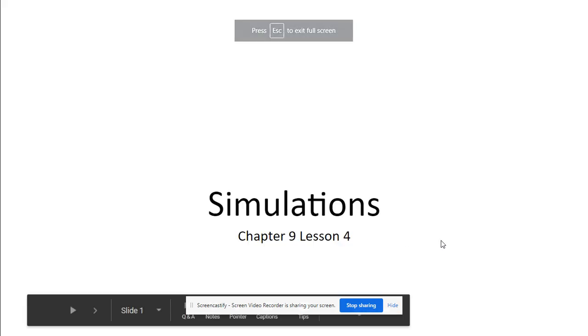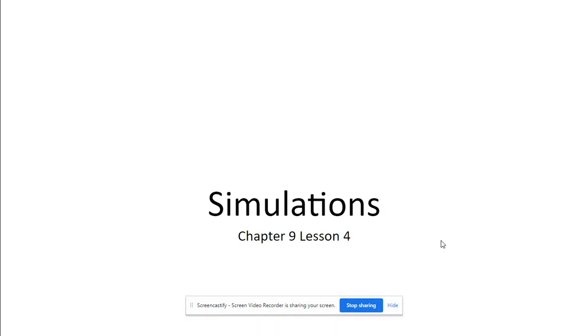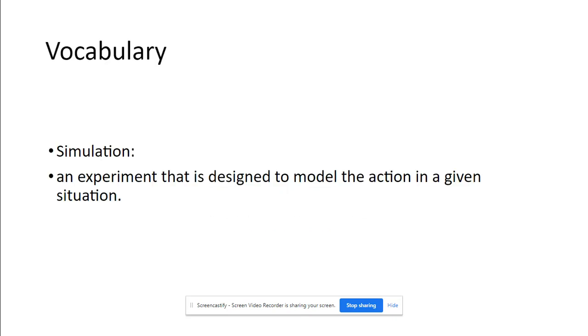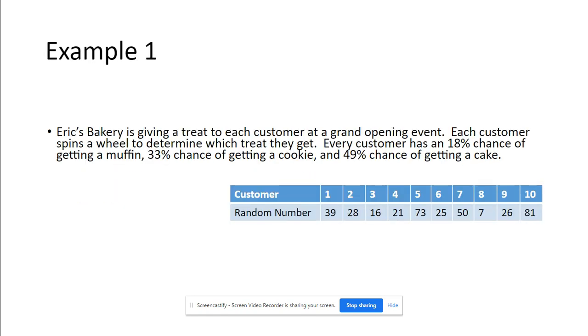All right, so in this chapter, chapter nine, lesson four, this is simulations. This is kind of an interesting chapter or lesson. A little bit weird. Even after this video, you may feel like you might need some additional help, so I really do encourage you to take advantage of the video conferences that Mrs. Klein and I are offering. So what you're going to see in these problems, a simulation is an experiment that is designed to model the action of a certain situation. We're going to be given some percentages and then we're going to use those percentages to set up some ranges and then analyze a table to see what the results would be.